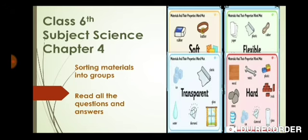Means, हम लोग किस प्रकार से category wise कर सकते हैं हर चीज को, और क्यों करना चाहिए. हमें हर चीज को उनके समूह के आधार पे बांट देना चाहिए. उनकी कुछ properties होती हैं जैसे soft, flexible, transparency, hardness, softness पे depend करता है. तो यह सारे उस material की कुछ properties हैं, जिनके आधार पे हम इनको बाट सकते हैं.